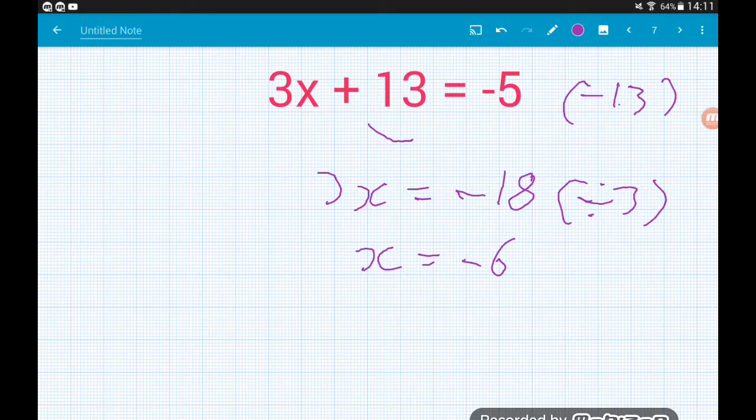We divide by 3 and get x equals minus 18 divided by 3 which is minus 6. We can check our answer. 3 times minus 6 would be minus 18. Minus 18 add 13 would indeed bring us back up to minus 5. Happy days.